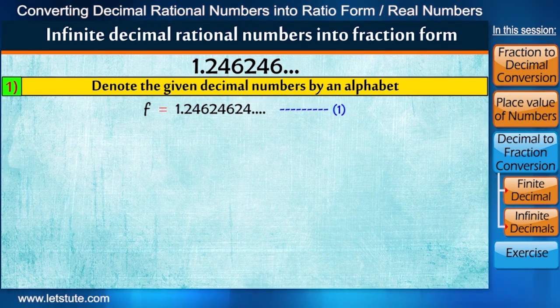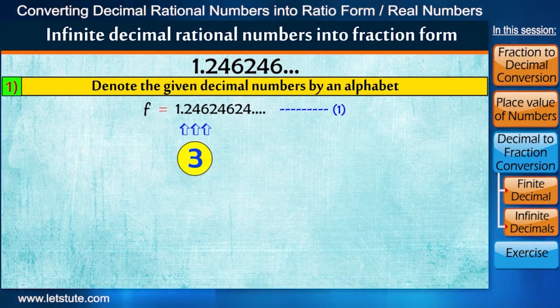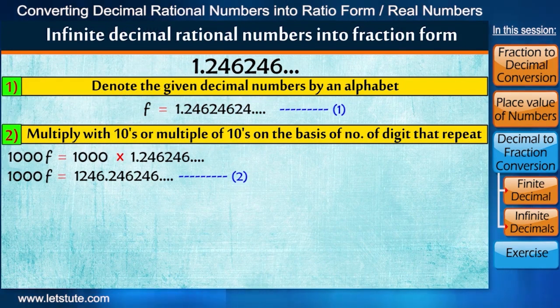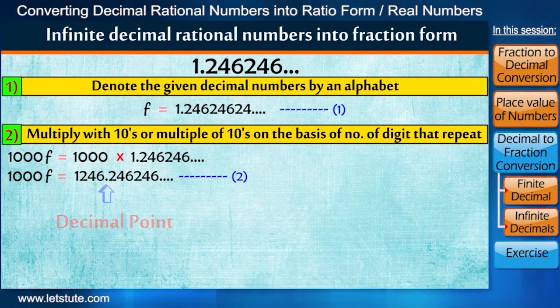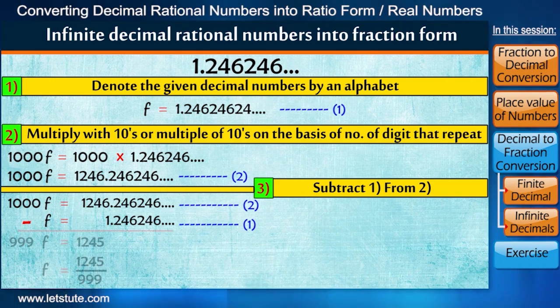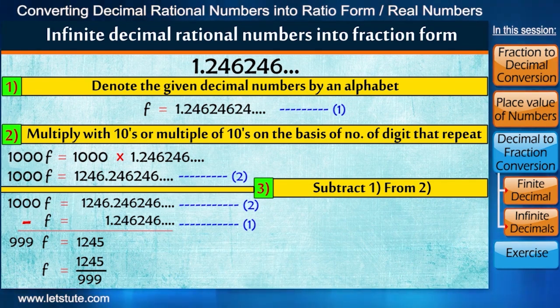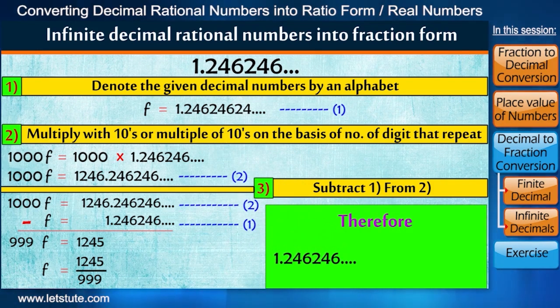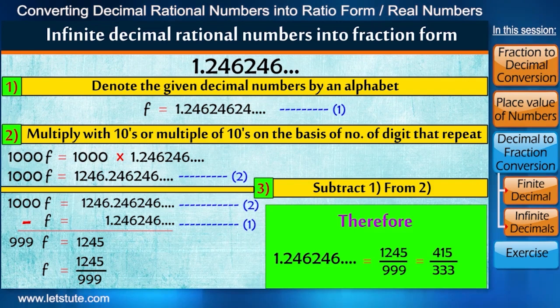Next we check that after decimal, 3 digits are repeating. So we multiply by 3 tens, that is by 1000 on both the sides. Now third step is to remove this decimal point. So we subtract 1 from 2. And we have got the fraction as 1245 upon 999. This means that the fraction form of the decimal number 1.246246... is equal to 1245 upon 999. You can also simplify this to 415 upon 333.